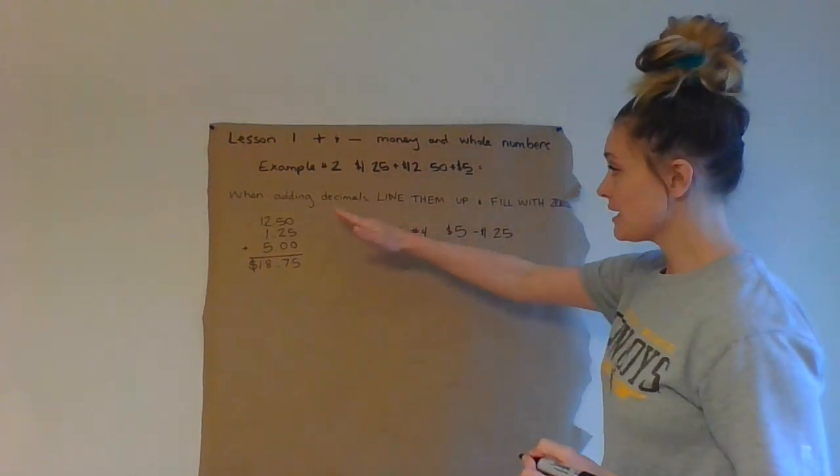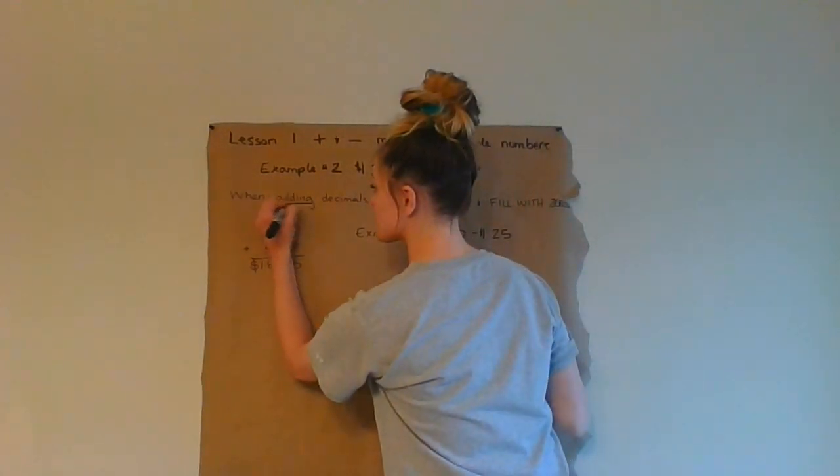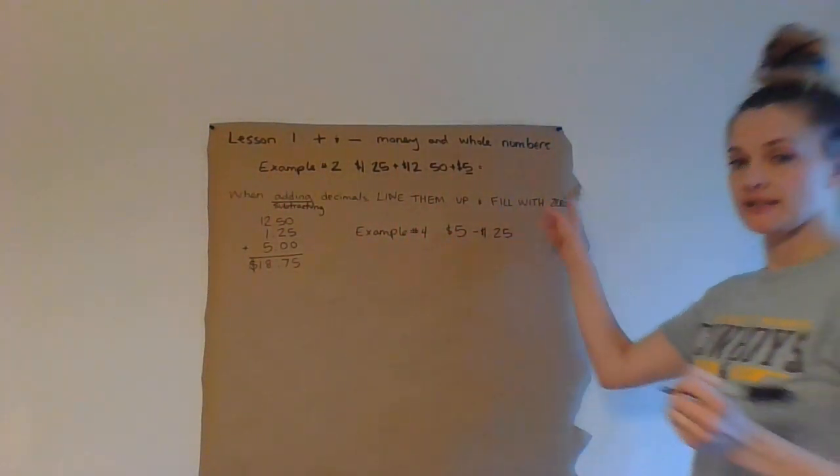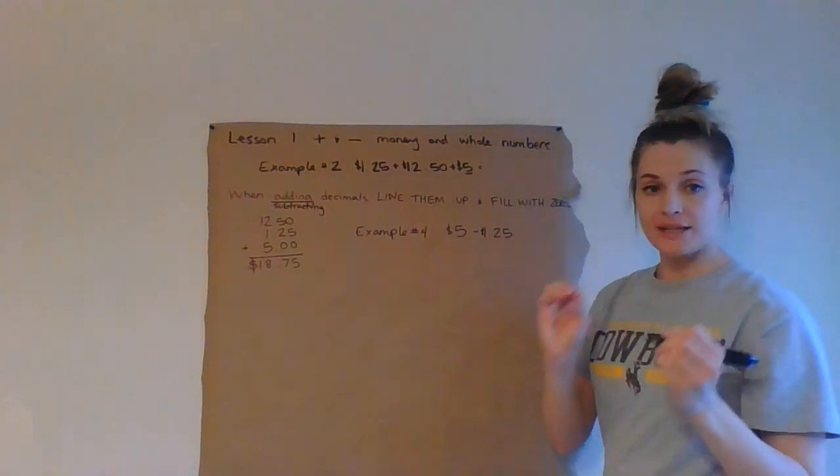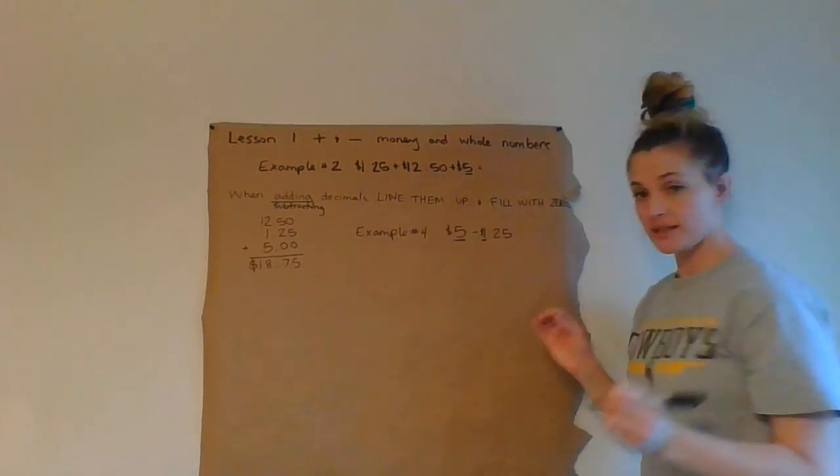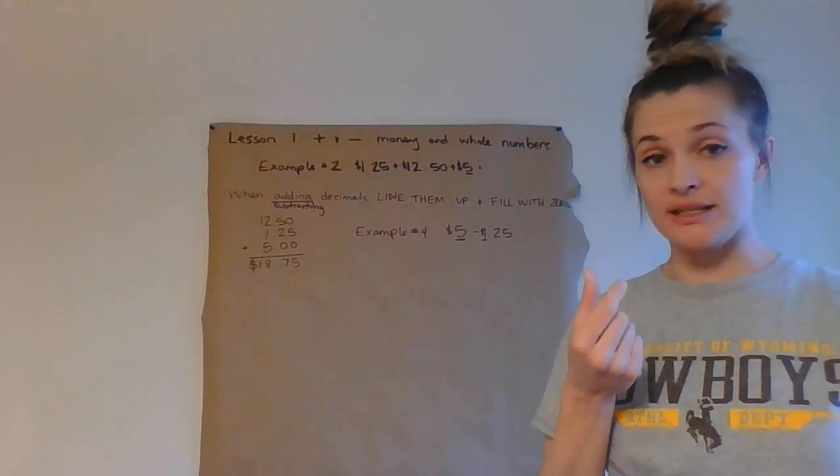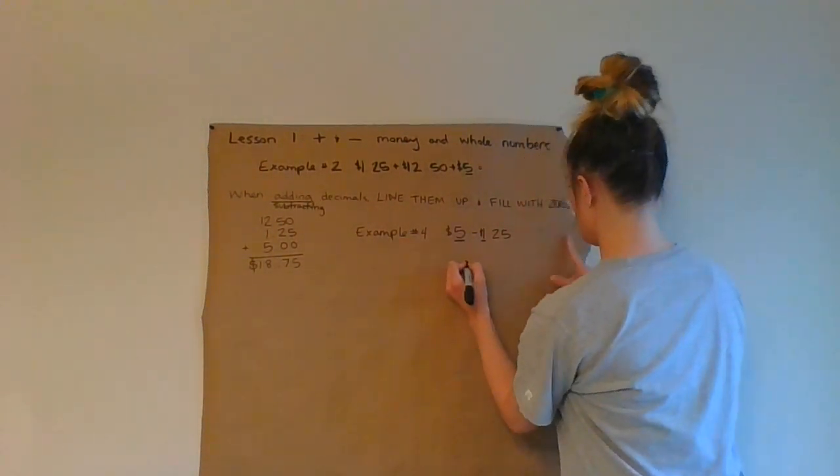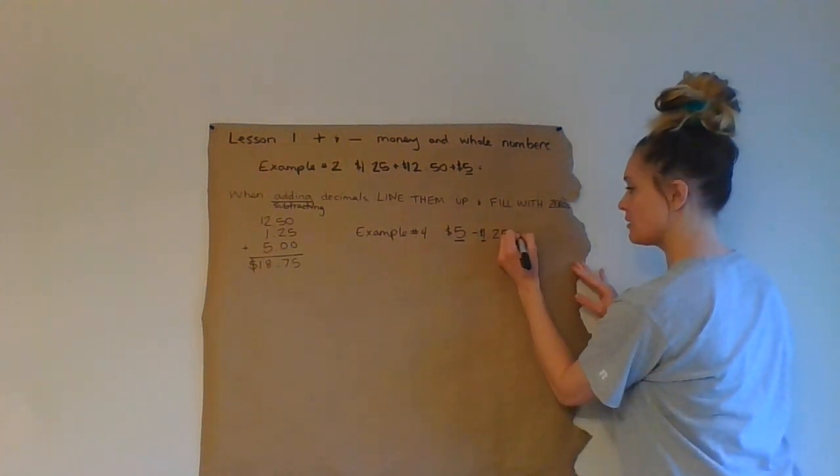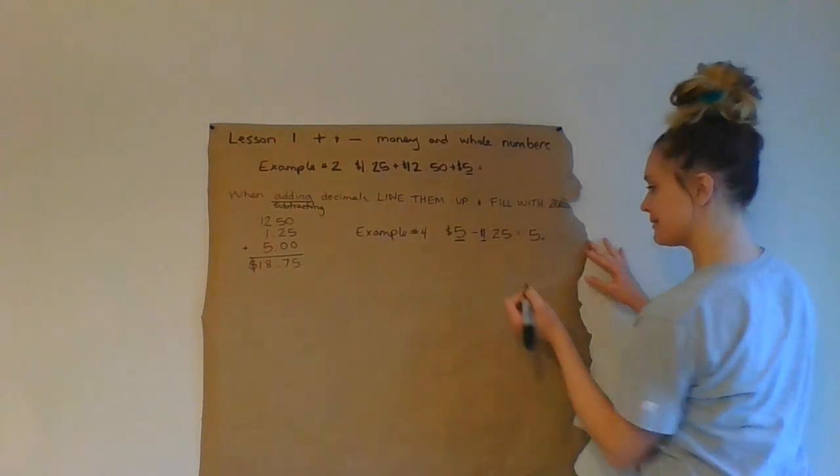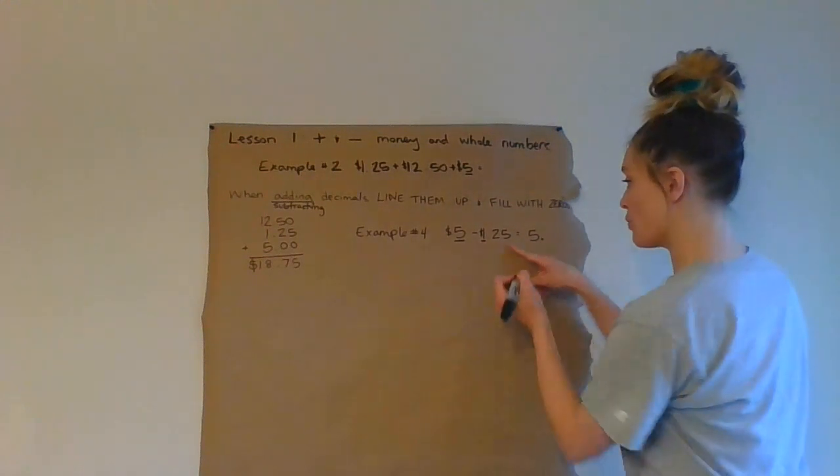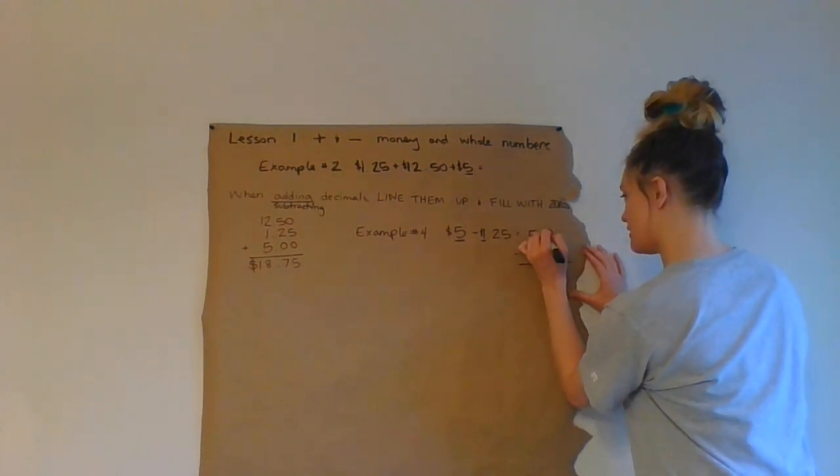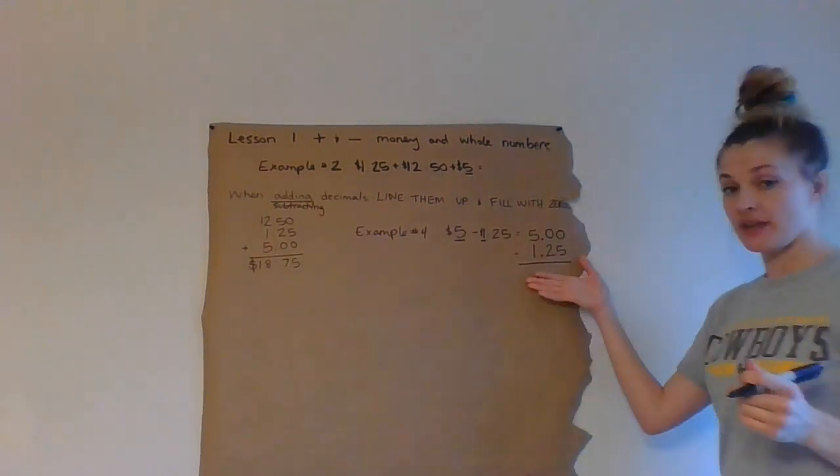Now, just like when I'm adding decimals, when I'm subtracting decimals, I need to line them up and fill with zeros. So, find the ones place. This is the ones place. This five is in the ones place. Now, subtraction is not commutative. You cannot switch the numbers around to get the same answer. Five is listed first. So, five goes on top. I'm going to do it right here. Five point. Because that's my one place, then I'm going to put my one right below it. And now I have to fill with zeros.